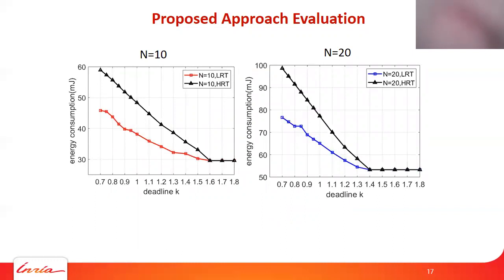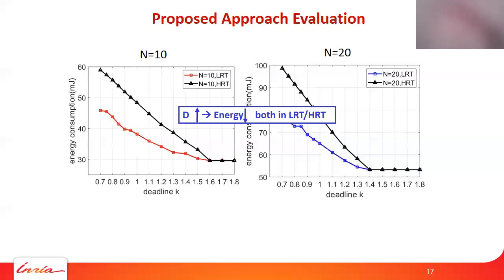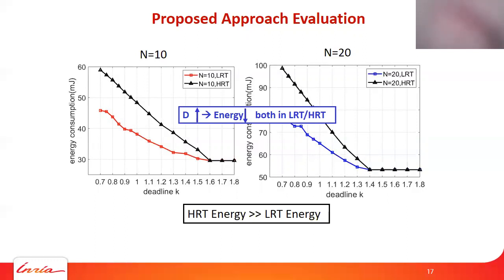We also compare energy consumption for low and high reliability threshold cases. When K increases and the deadline becomes loose, energy consumption decreases in both groups. In high reliability threshold cases, more energy is consumed, especially in strict deadline cases, because higher frequencies must be assigned to meet the reliability requirements compared to lower reliability threshold cases.